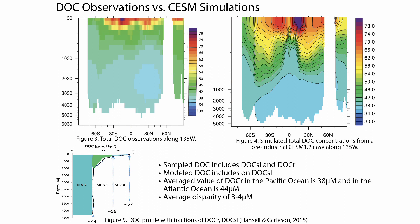With DOC observations and DOC simulations, sampled DOC includes semilabile DOC and refractory DOC. When sampling you collect everything, whereas with model simulations you only see semilabile DOC since refractory DOC is really hard to simulate. The average value of DOC in the Pacific Ocean is 38 micromolar, and in the Atlantic Ocean it's a little higher at 44 micromolar. The average disparity between modeled DOC and observational DOC is about 3 to 4 micromolar throughout the water column.